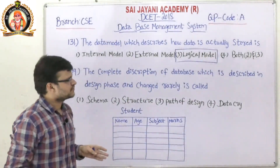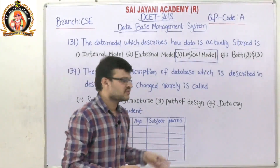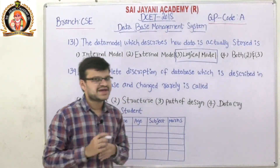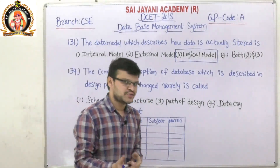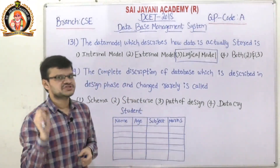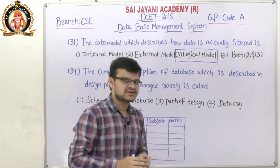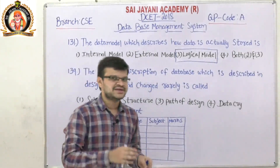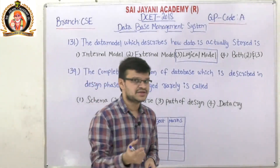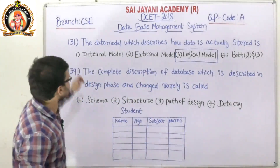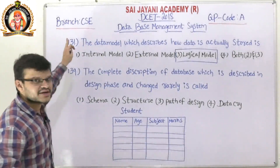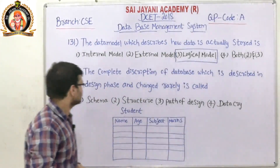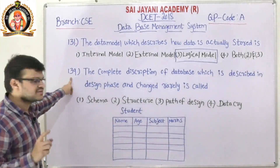A logical model mainly consists of logically related information like entities, attributes, and relationships among entities. Along with that, it has constraints, primary key, and foreign key. For question number 131, option number 3, logical model, is the right answer.